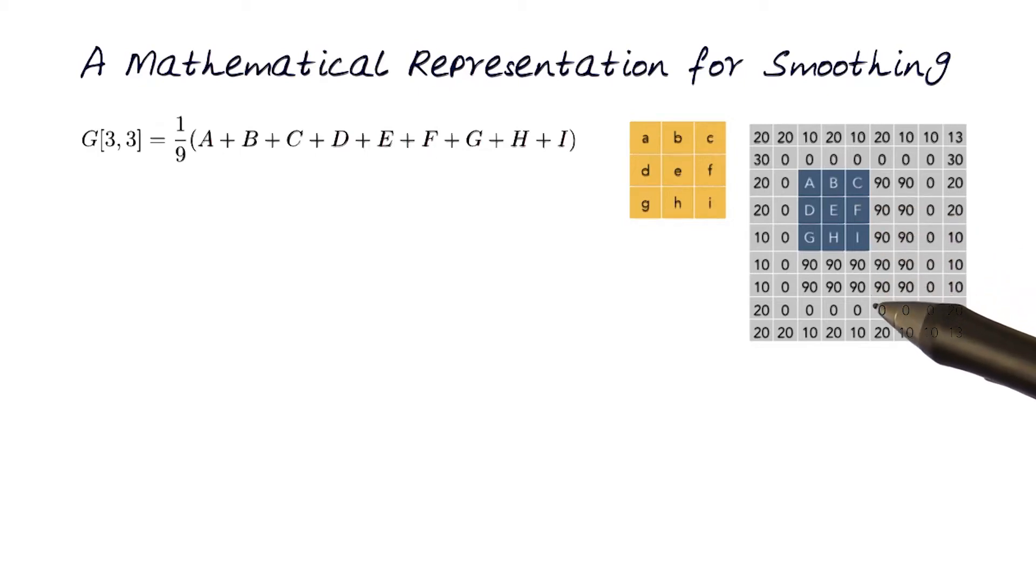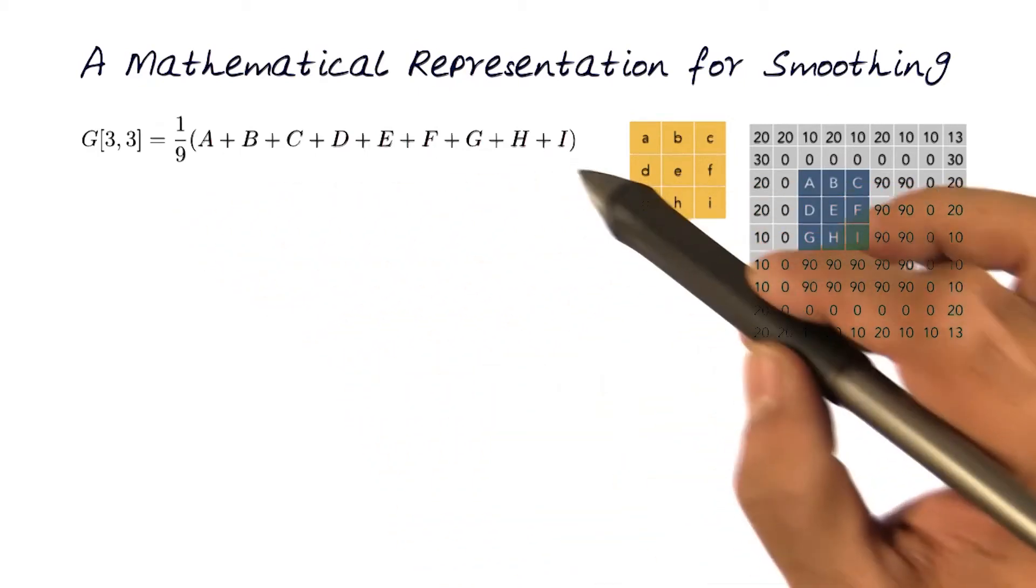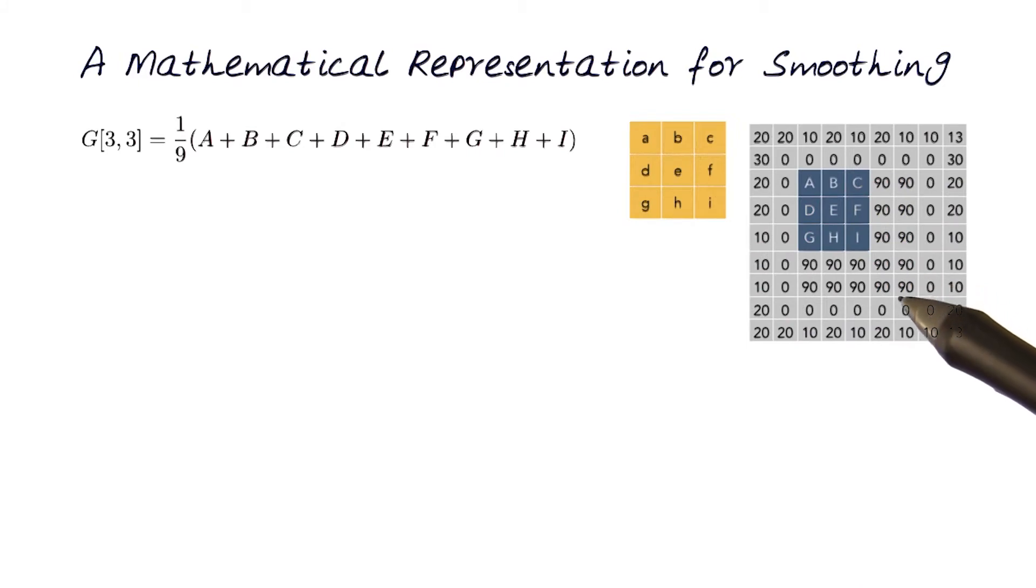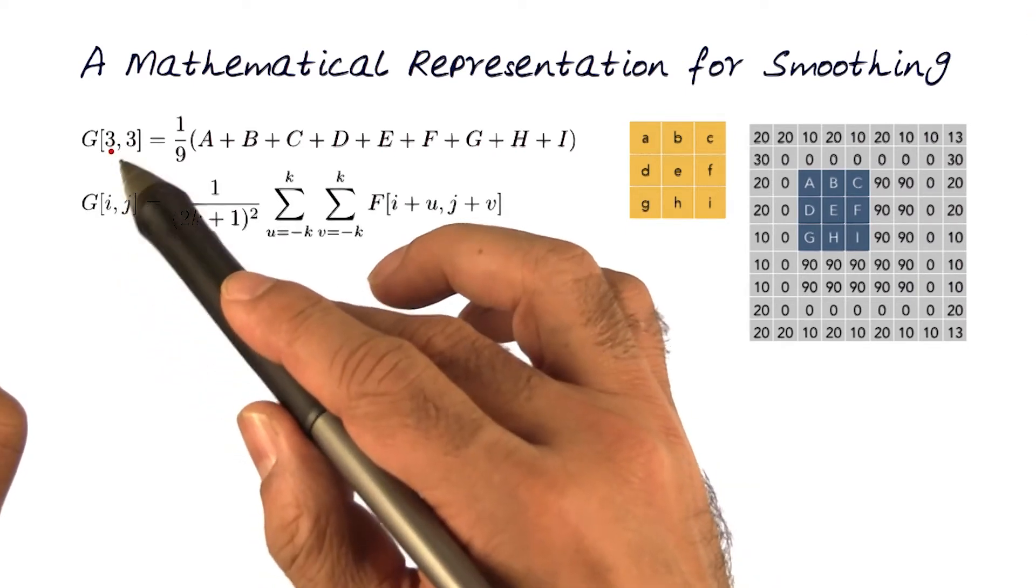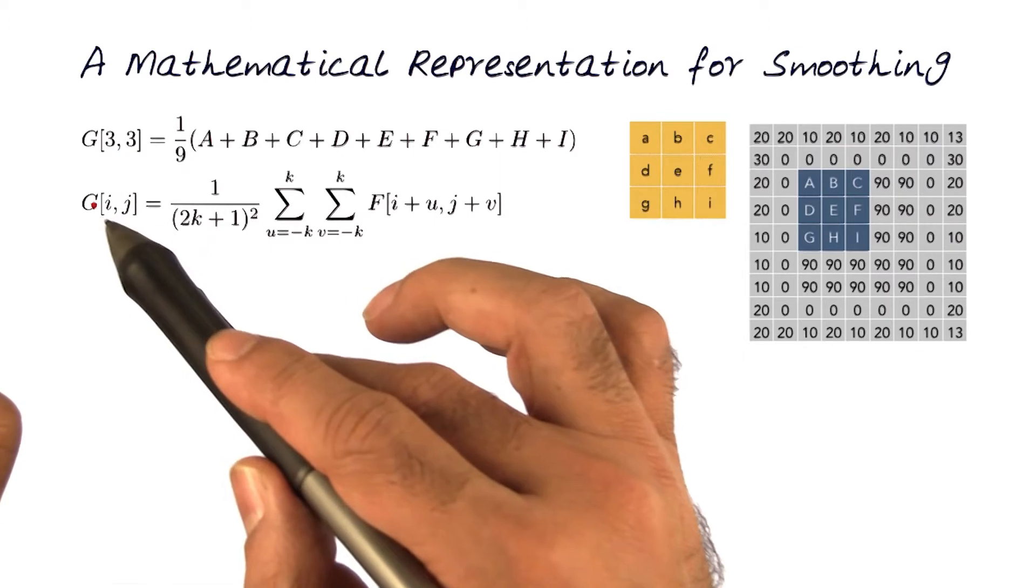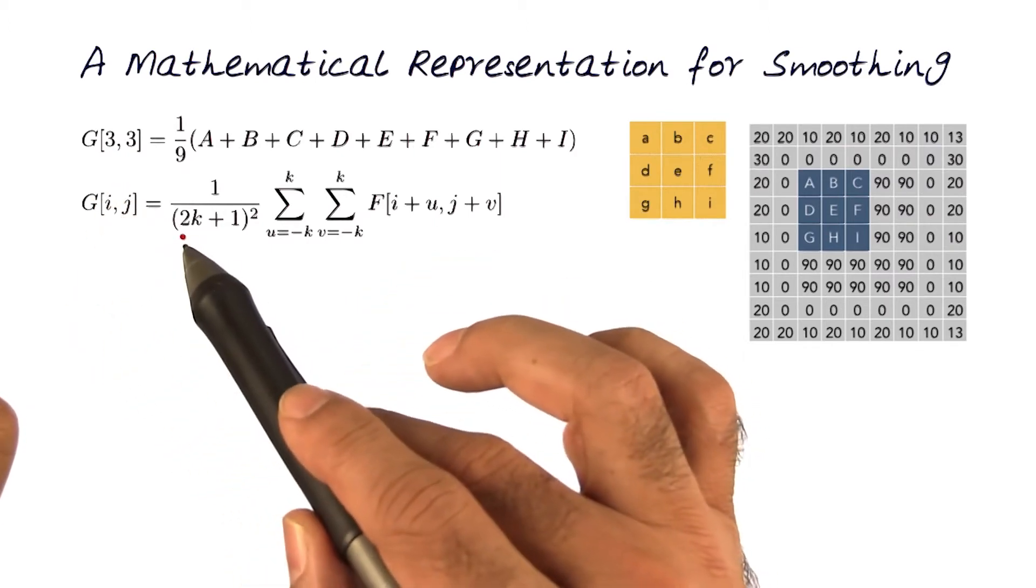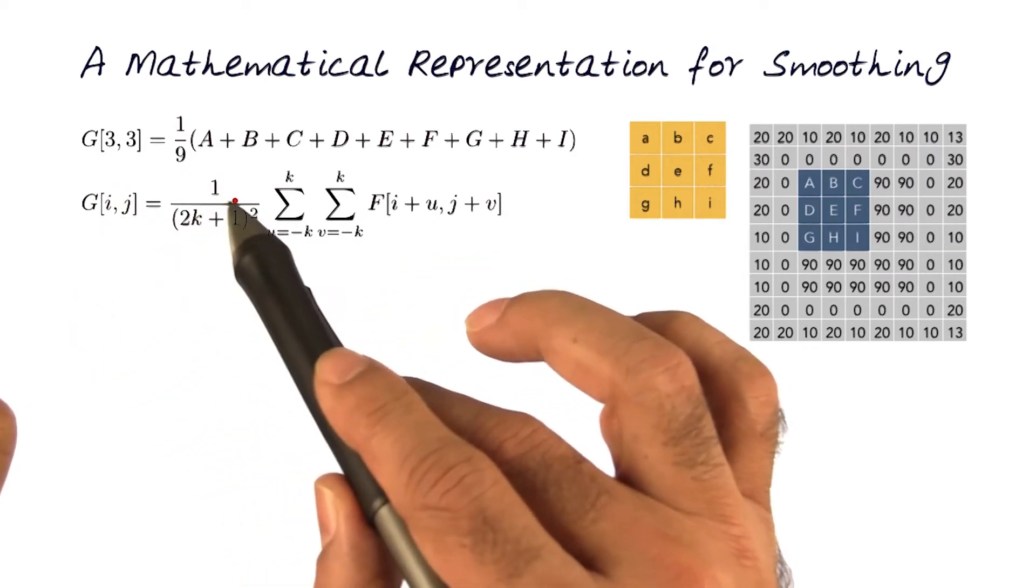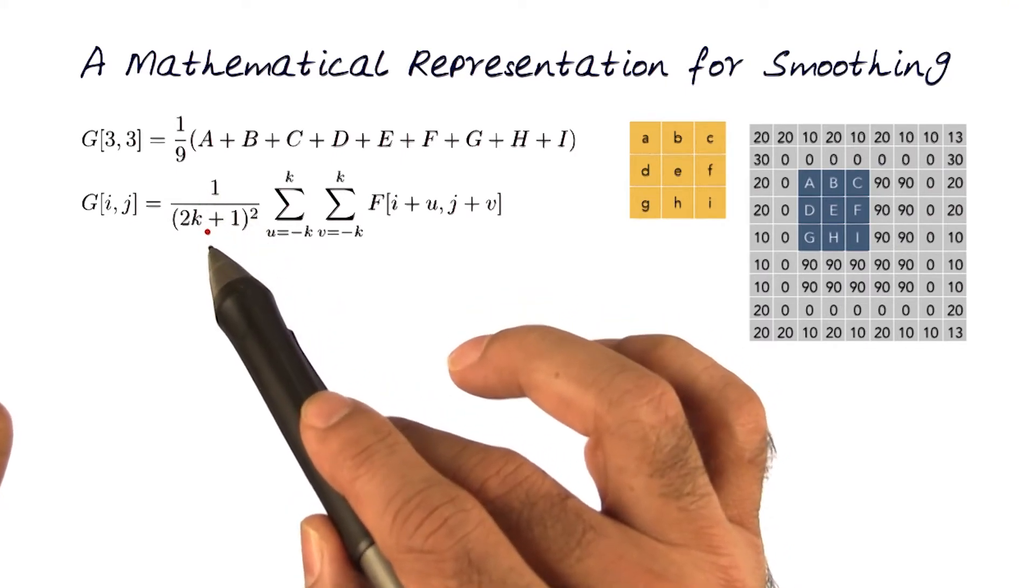Let's look at this example of the 1 over 9 summation to see how we can generalize this mathematical formulation. The general form of this equation would be the following. Rather than just for the 3 by 3, for any part of the image, I want to have 1 over something which would be normalizing over this equation.